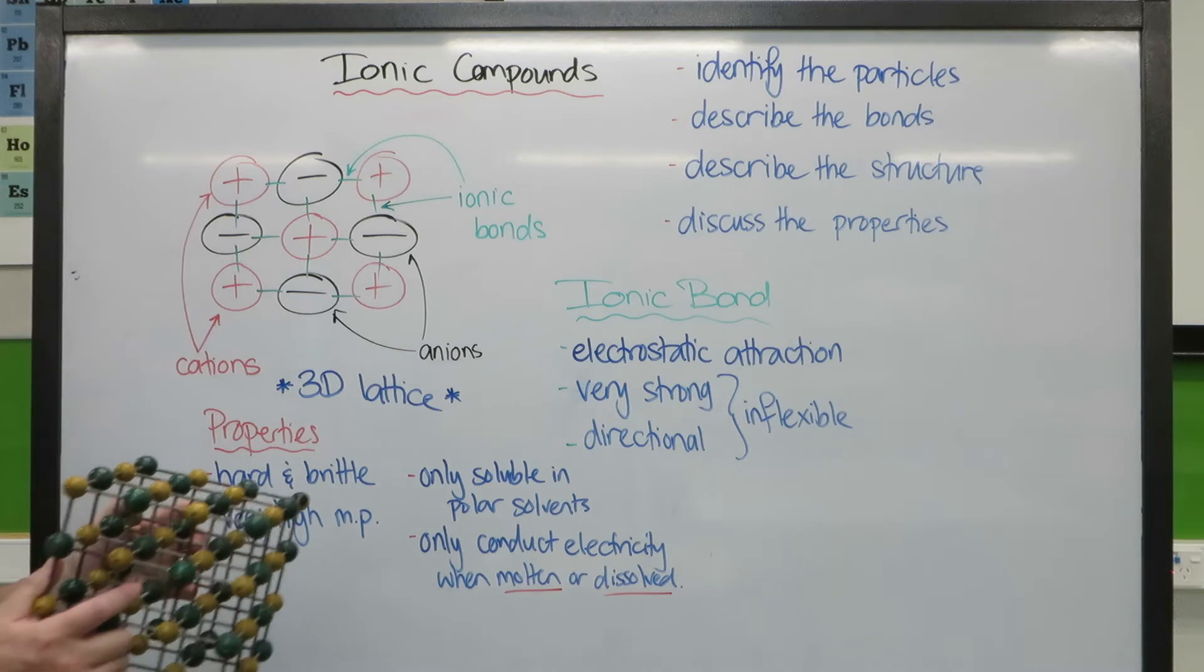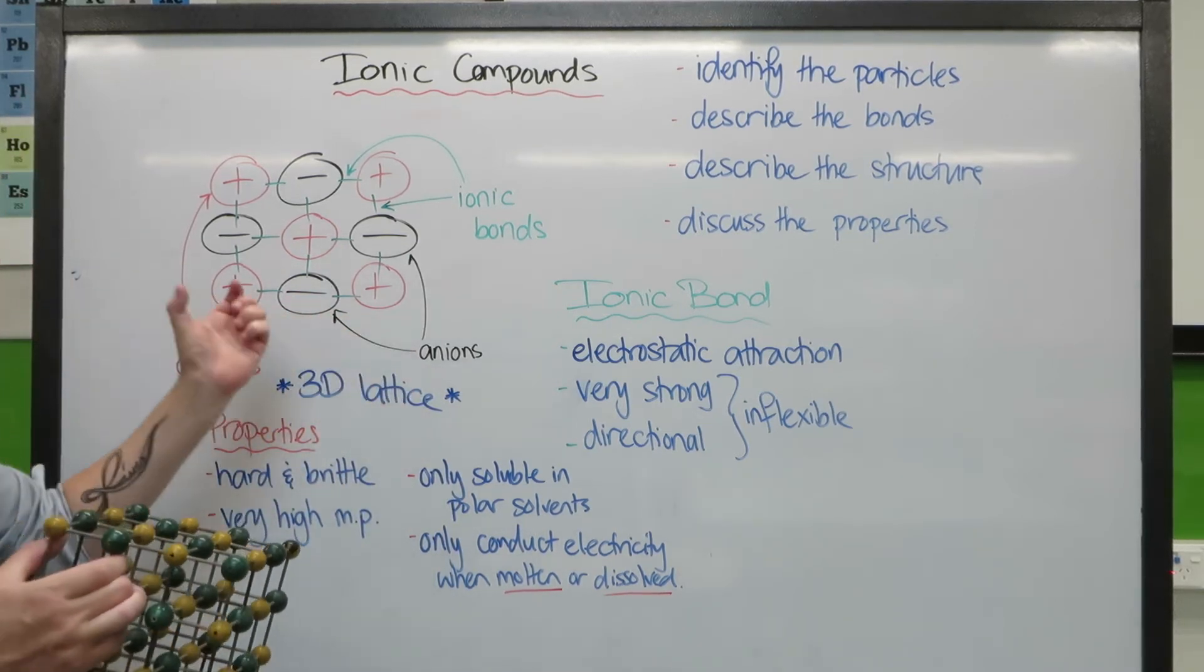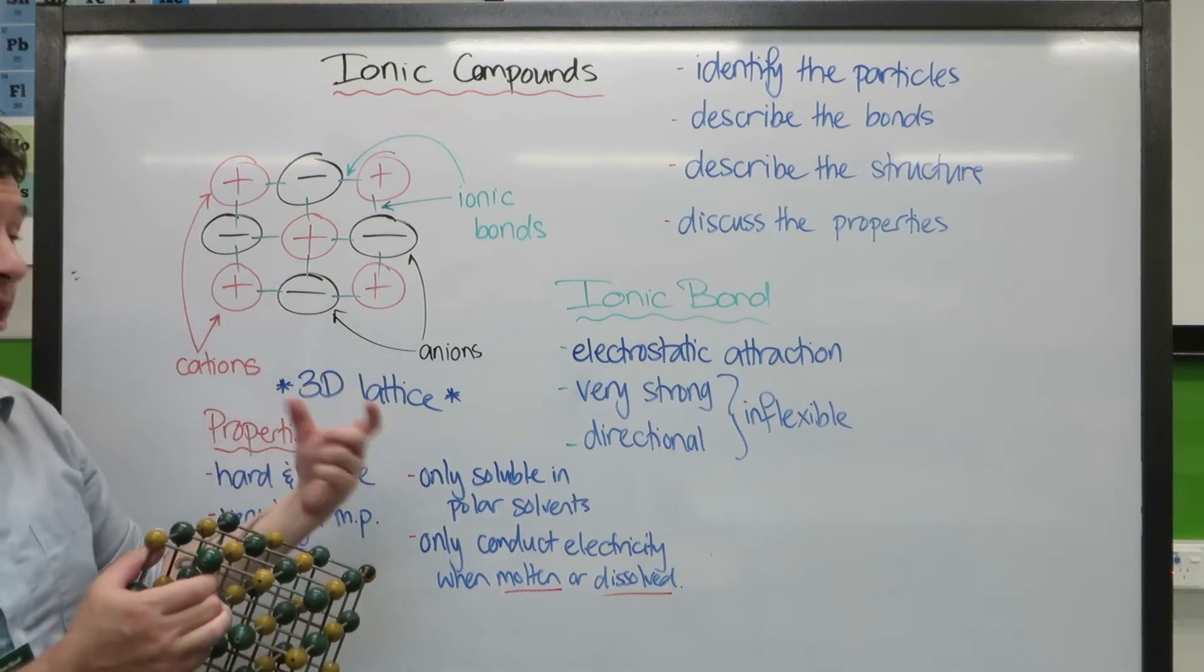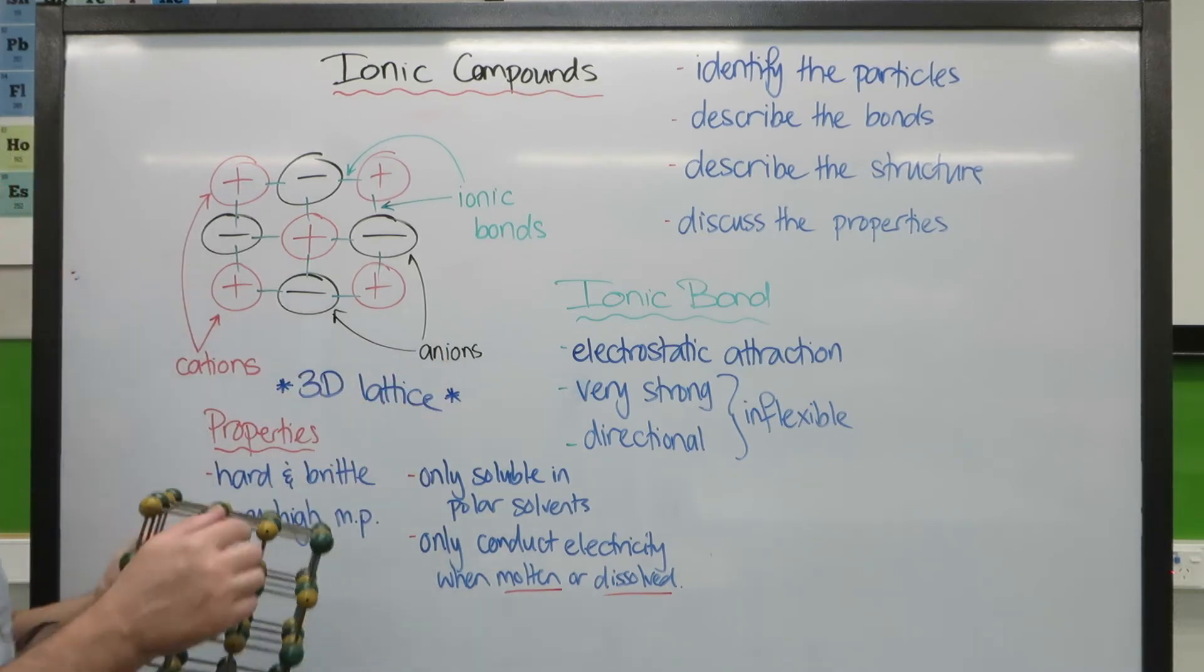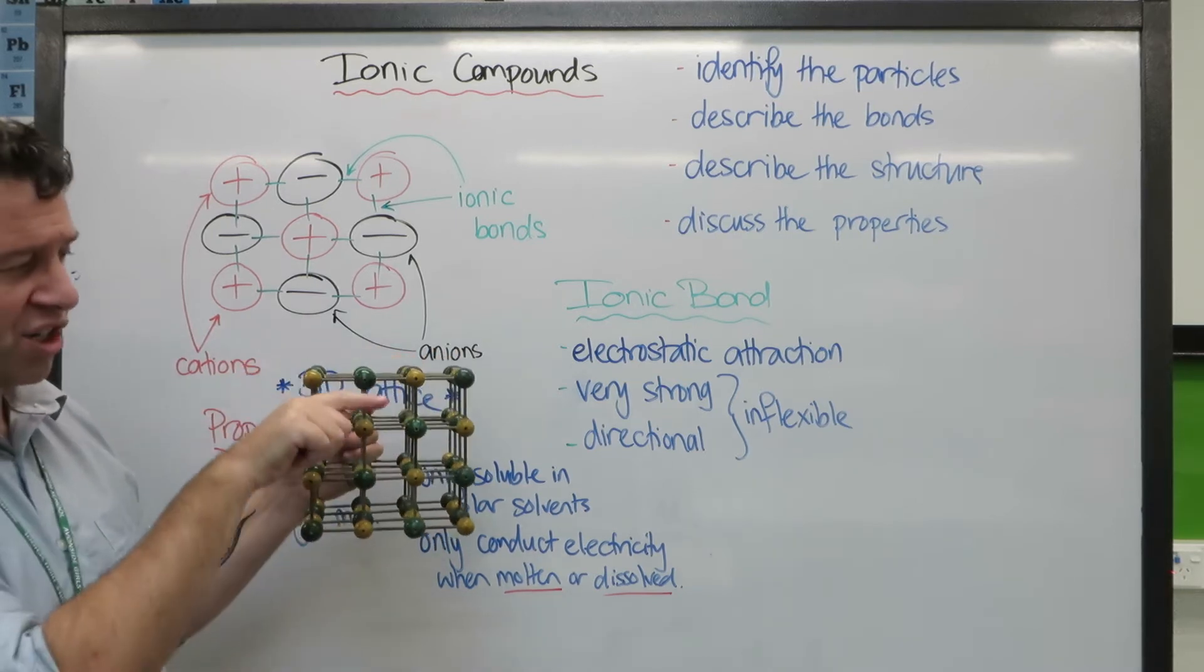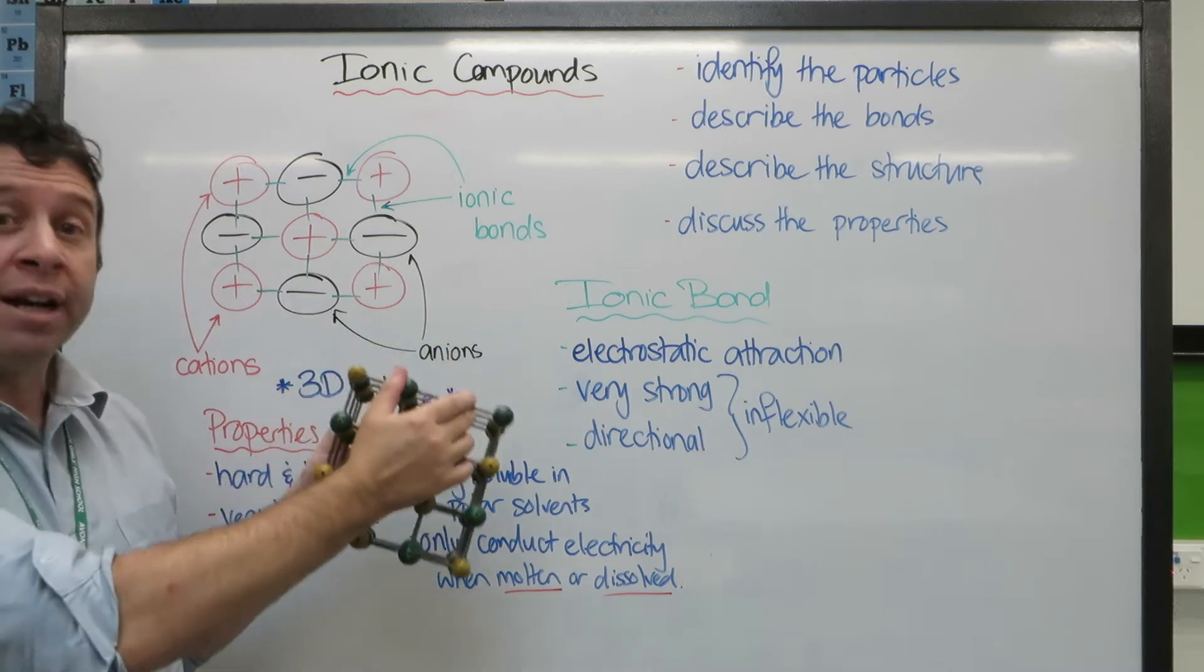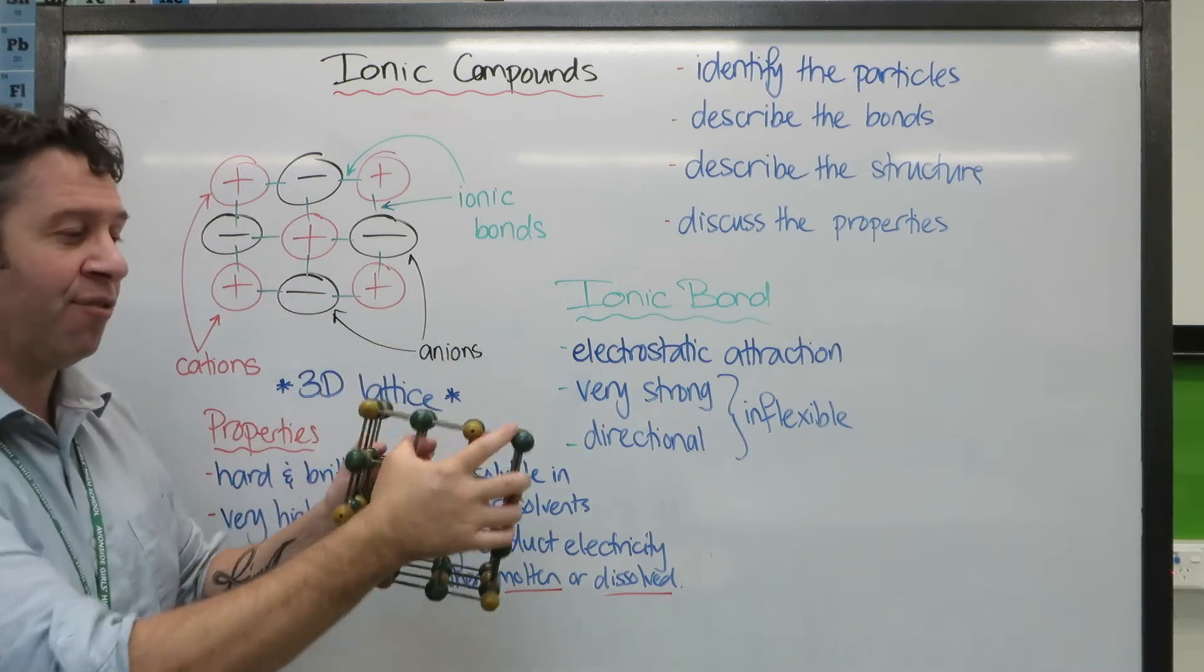We need to be able to describe the bond. The bond is the ionic bond. Now because they're positives and negatives, they've got an electrostatic, or an electric attraction. That is also in a direction. Notice the lines here - they're representing them as in a direction towards each other. Because it's strong and directional, that makes it inflexible.